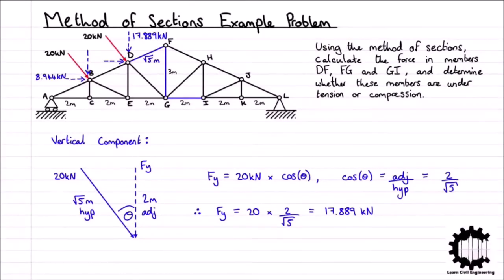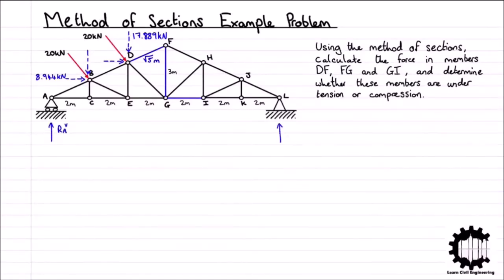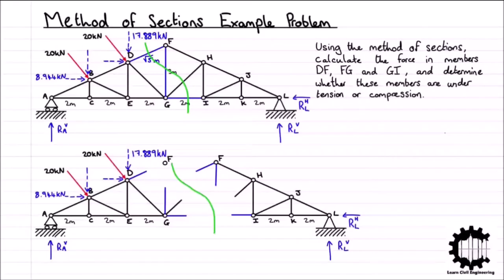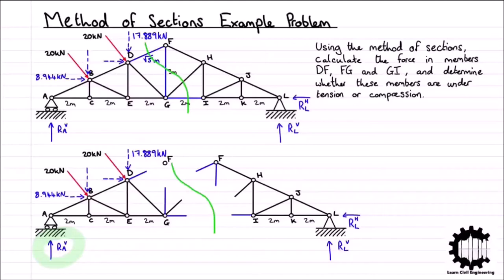Having determined the horizontal and vertical components of the external forces, we can start working out the forces in the required members. We need to find reaction forces RAV, RLV, and RLH. But before that, let's determine where we will make our cut to divide the structure into two substructures. We need to find the internal forces in members DF, FG, and GI, so we will cut through members DF, FG, GH, and GI, leaving us with two separate trusses. For this example, we will consider only the left-hand structure.